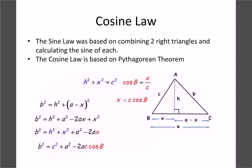The sine law was based on breaking a triangle into two triangles and using regular sine. The cosine law is actually based on the Pythagorean theorem. Looking at this diagram with sides a, b, c and vertical height h: from Pythagorean theorem, h² + x² = c². We also know cosine of B equals x over c, so rearranging: x = c·cos B.